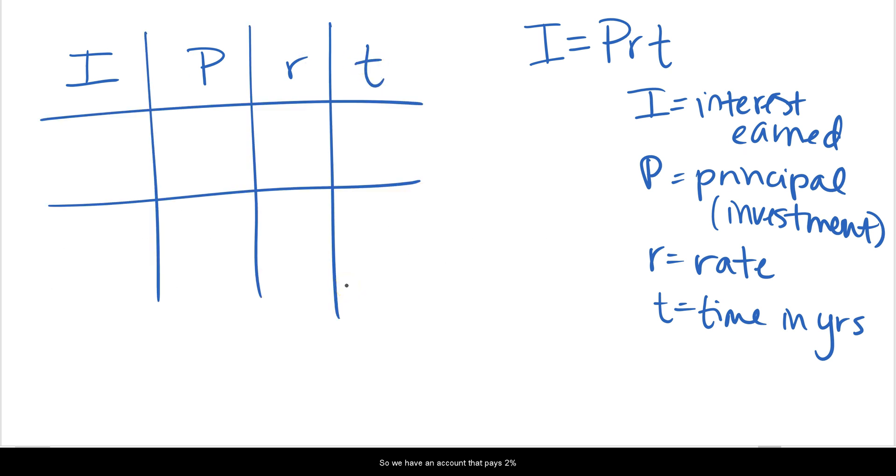We have an account that pays 2% simple interest. So under the R column for one row, I'm going to put 0.02 because that's 2% as a decimal. And the other account is 3% interest, so as a decimal, that'll be 0.03. This is at the end of five years, so T would be 5 for each scenario.